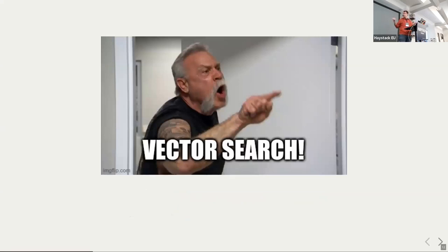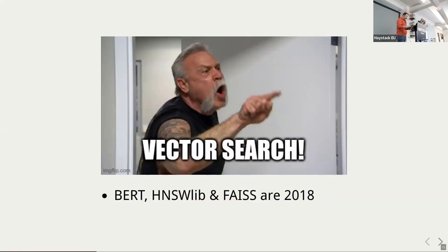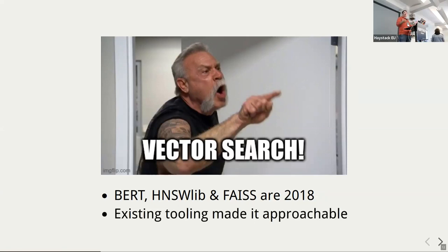It's usually the same story that happened with vector search. The BERT model and different libraries for approximate nearest neighbors are quite old — you could have done vector search four years ago, but probably didn't because there was no tooling. You needed to glue different open source projects together to make it work. Right now there is tooling — you just run it and in five days you might find out it's not going to work, rather than waiting five months.